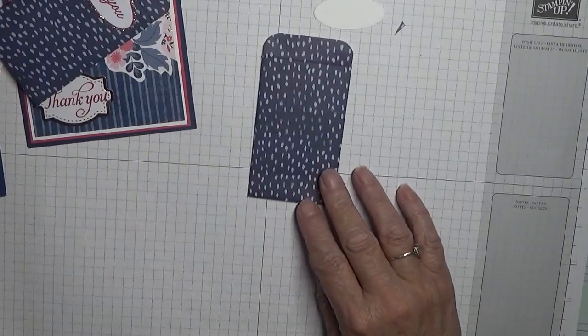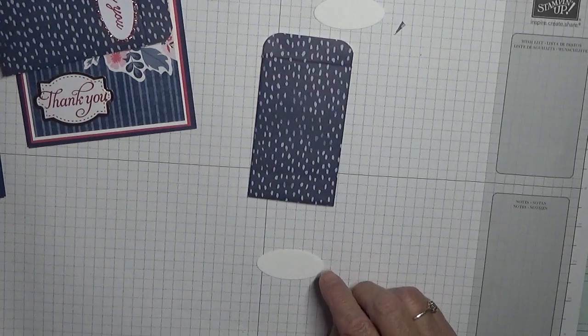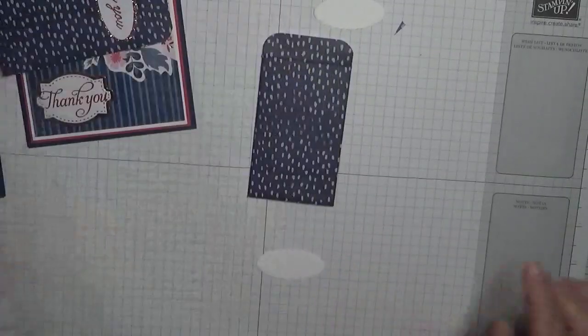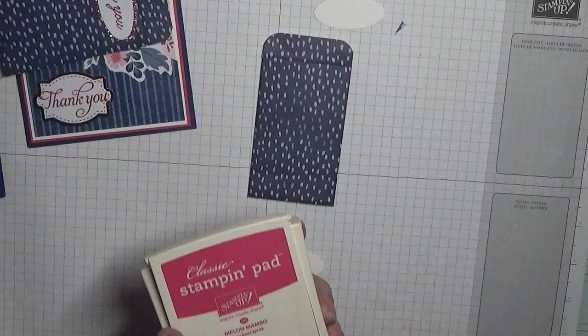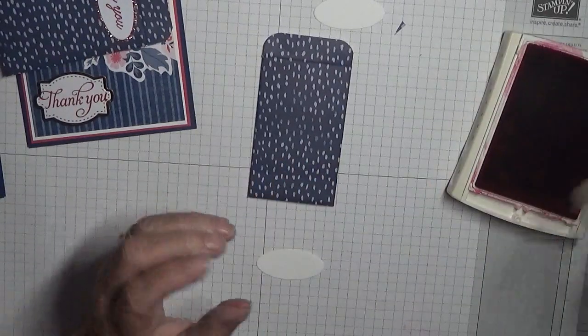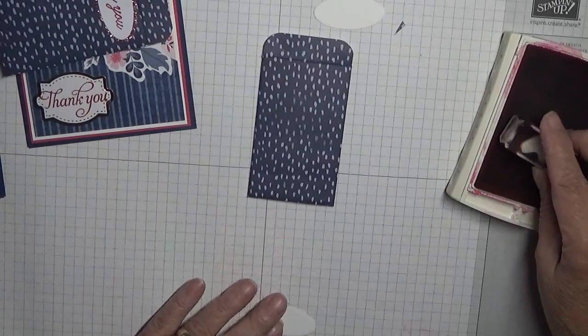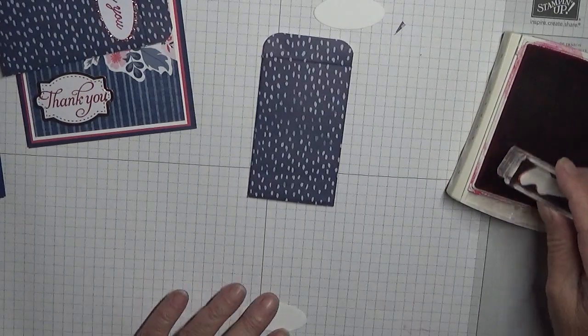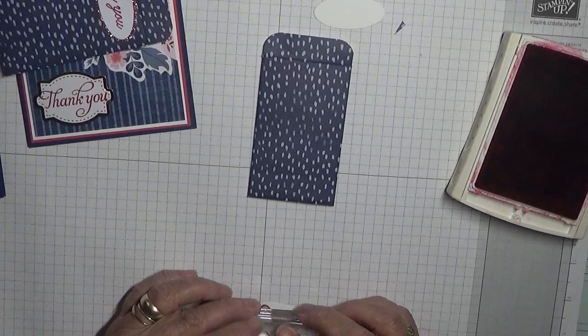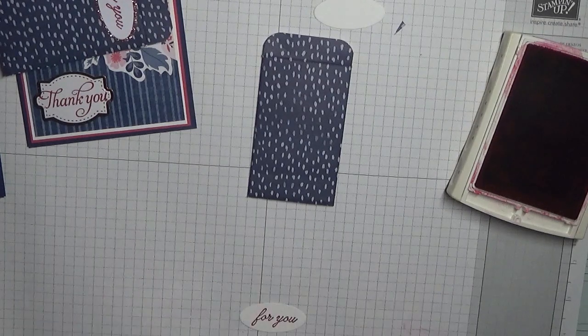To do that, we're going to stamp 'for you' on this tiny oval. I got it out of Beauty Abound, just that little tiny 'for you'. I'm going to use Melon Mambo ink and I have a stamp mounted. I should bring this closer and I shall stamp that on there. Perfect.